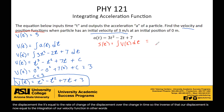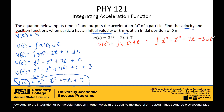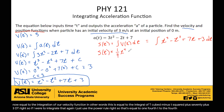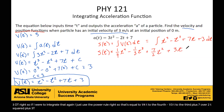This is equal to the integral of t cubed minus t squared plus 7t plus 3 dt. If I were to integrate that, again using the power rule, that's equal to one-fourth t to the fourth minus one-third t to the third, plus 7 over 2 times t squared, plus 3t, plus another C — we have another integration constant.